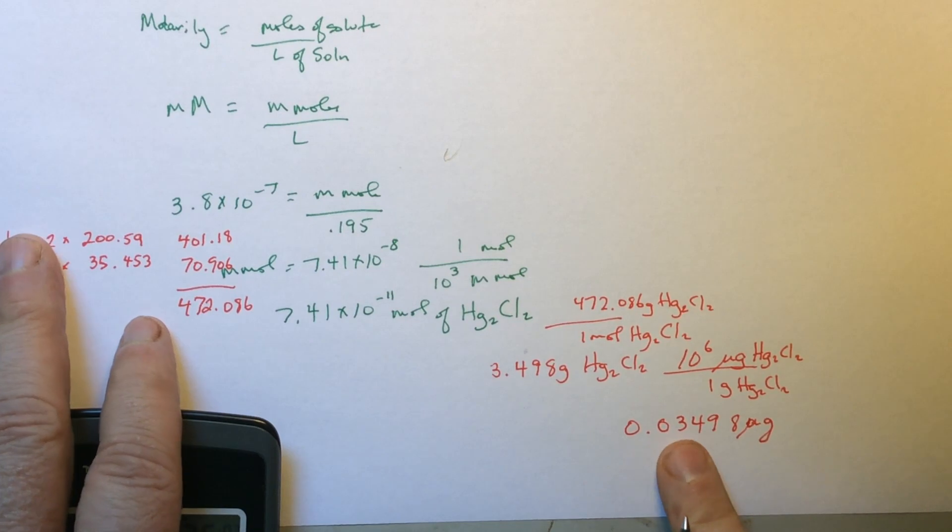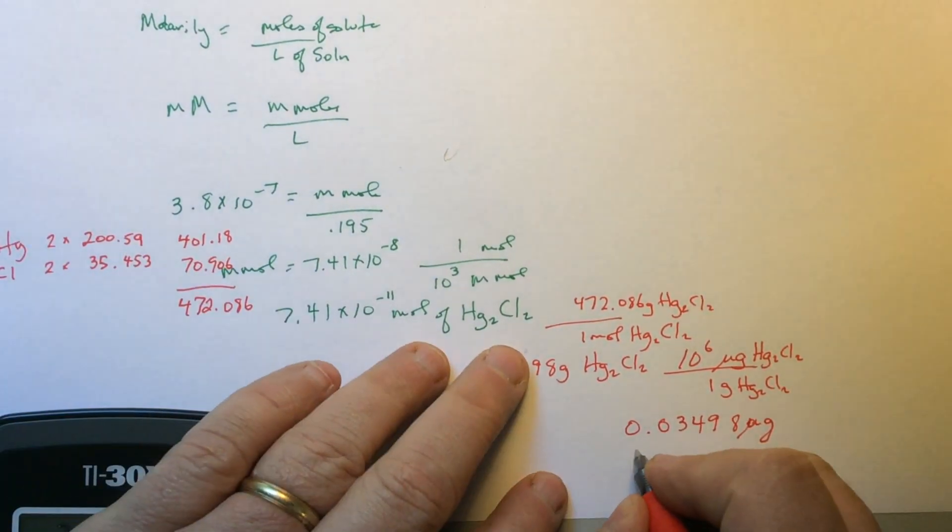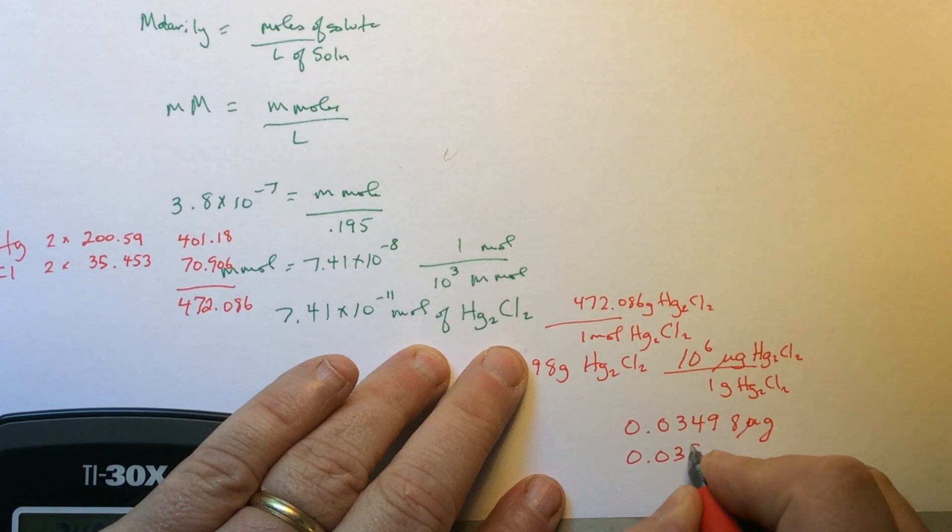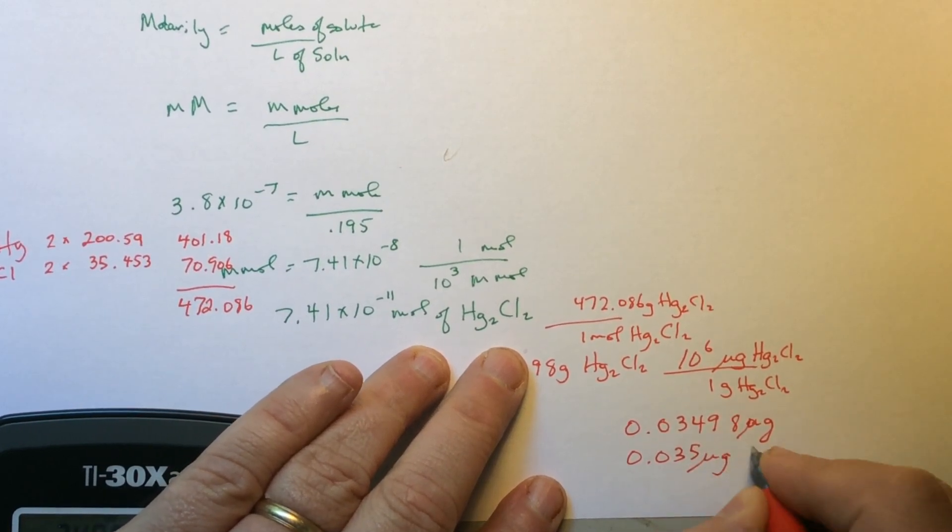So it needs to be 0.035 micrograms of HgCl.